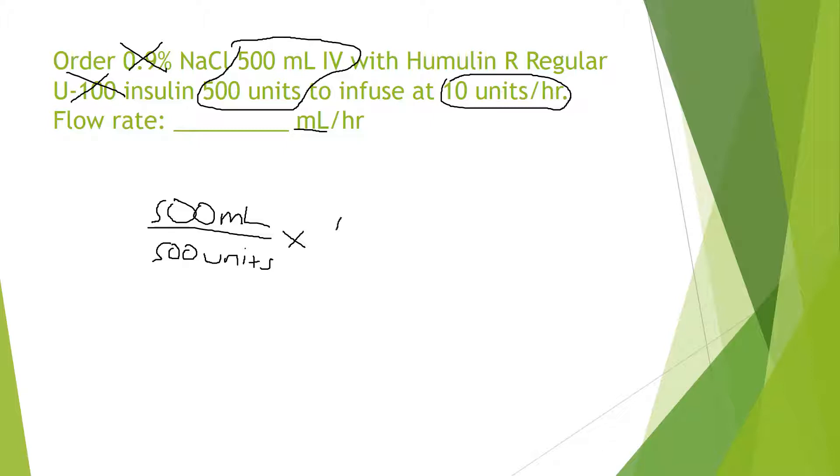I'm going to multiply by the 10 units per hour. Units cross out. I already know that I'm in the right unit milliliter per hour that I want. And it's just a matter of solving it. Now I made this really, really easy for you guys. You just cross out the 500 over 500 that equals one. And so your answer is just 10 milliliters per hour. So it actually ends up being the same thing.